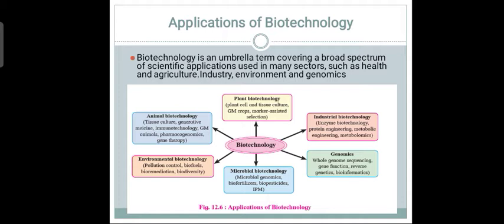Animal biotechnology includes tissue culture, regenerative medicines, immunotechnology, genetically modified animals, pharmacogenomics, and gene therapy. Plant biotechnology covers tissue culture, cell culture, genetically modified crops, and marker-assisted selection. Directly or indirectly, every aspect of our life depends upon biotechnology.